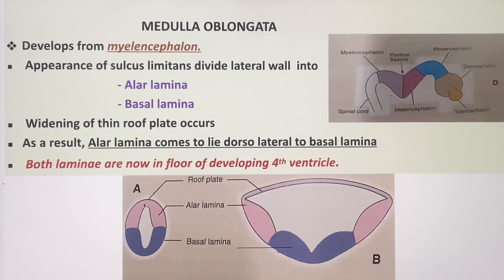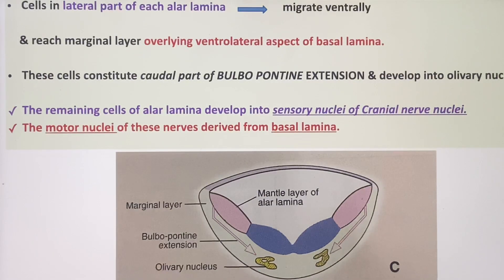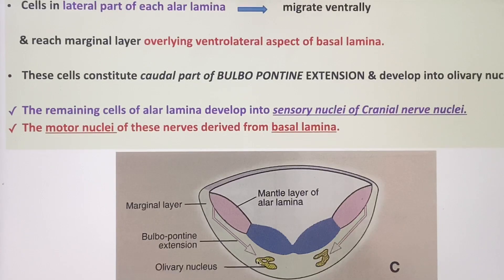Later on, the widening of this thin roof plate happens. As a result, the alar lamina comes to lie dorsolateral to the basal lamina. These two laminae are now lying in the floor of the developing fourth ventricle. Cells in the lateral part of each alar lamina migrate ventrally as the bulbopontine extension, forming the caudal portion lying ventrolateral to the basal lamina.